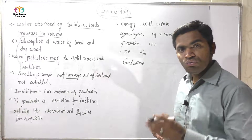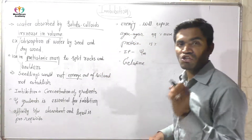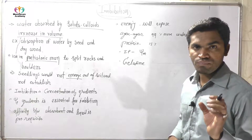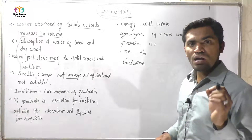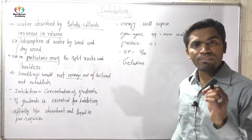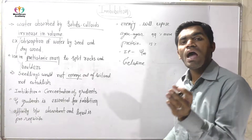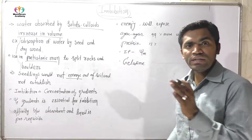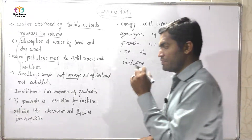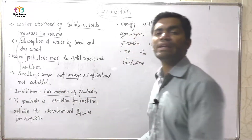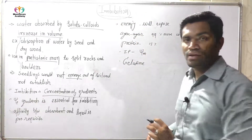The seed establishes due to the presence of imbibation pressure. Imbibation pressure happens when a concentration gradient of water is present. A dry seed has a lower amount of water. When put in soil, due to the absence of water in the seed and the higher presence of water outside the seed, a water concentration gradient is created, and water is absorbed by the seed.